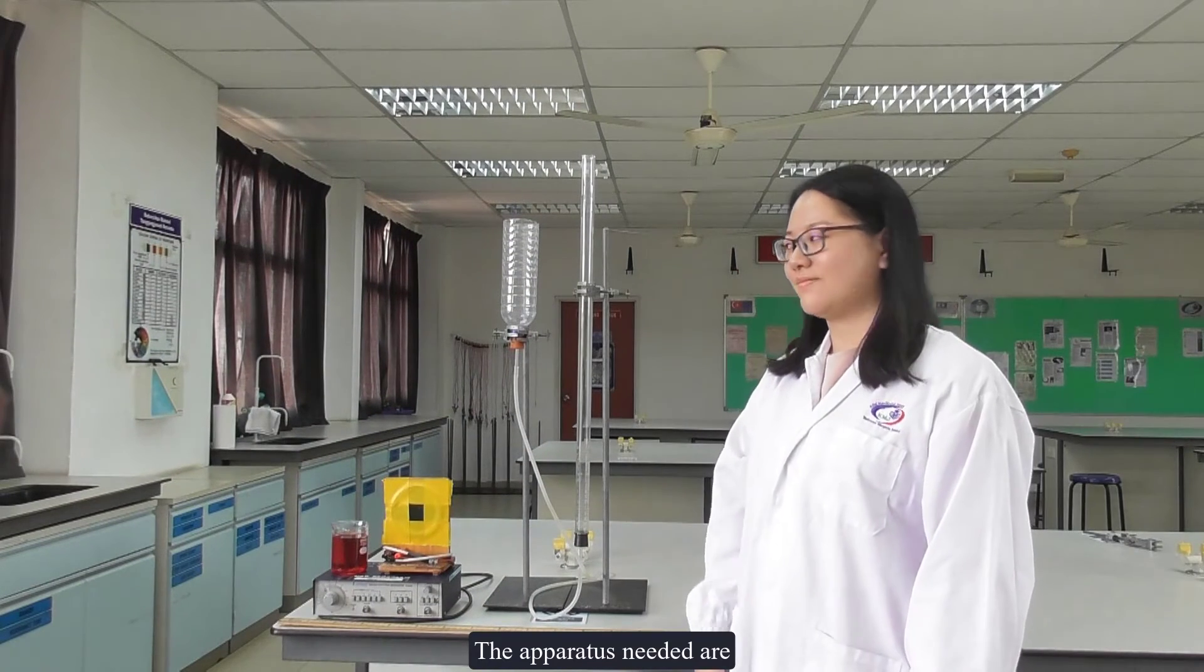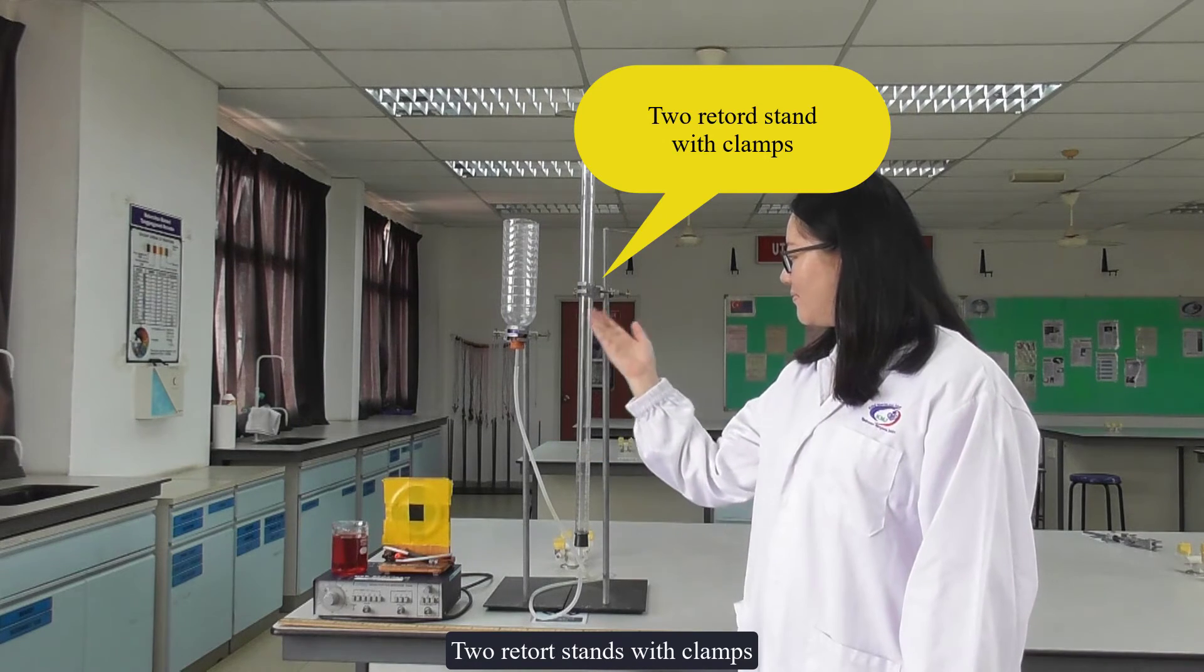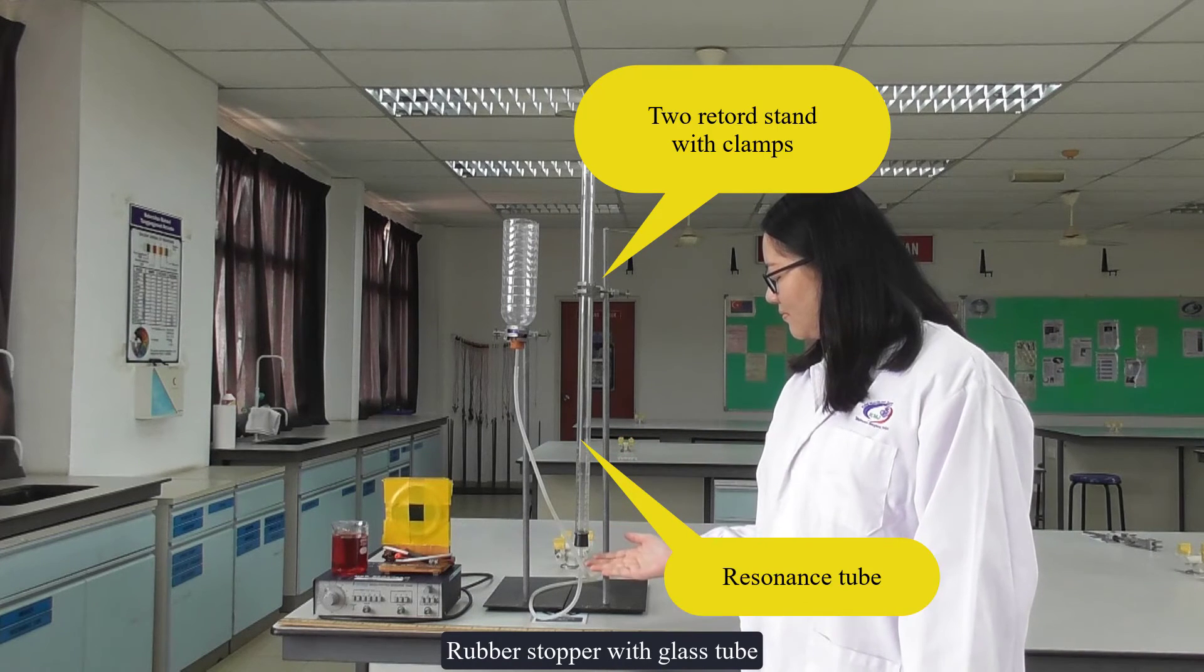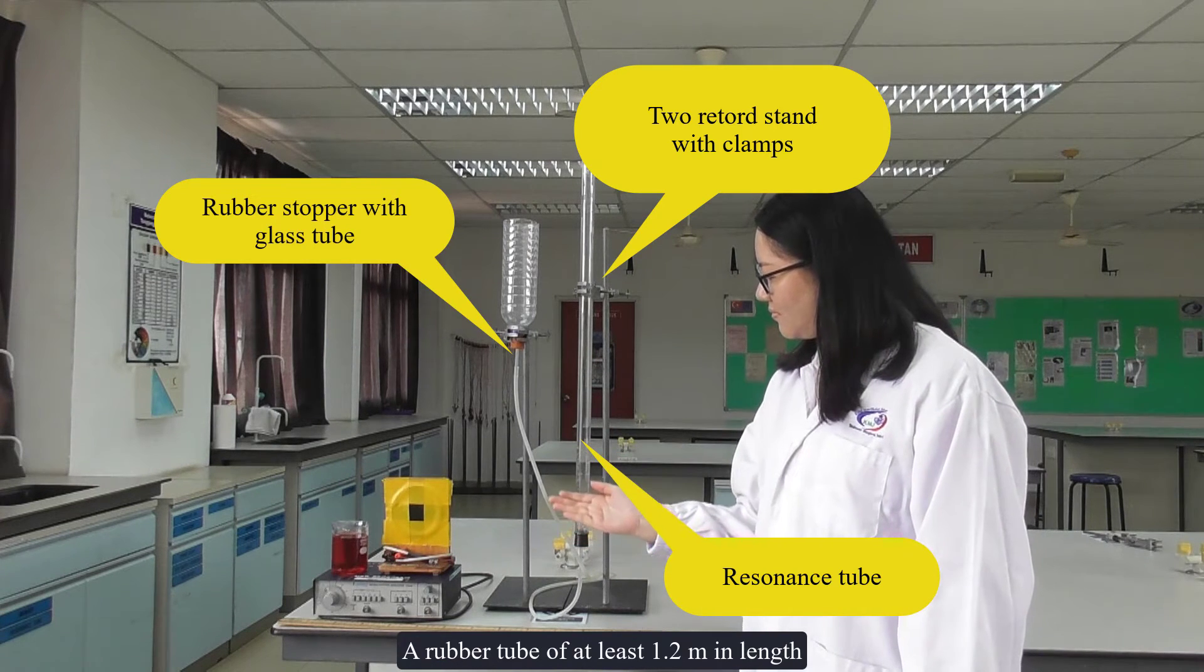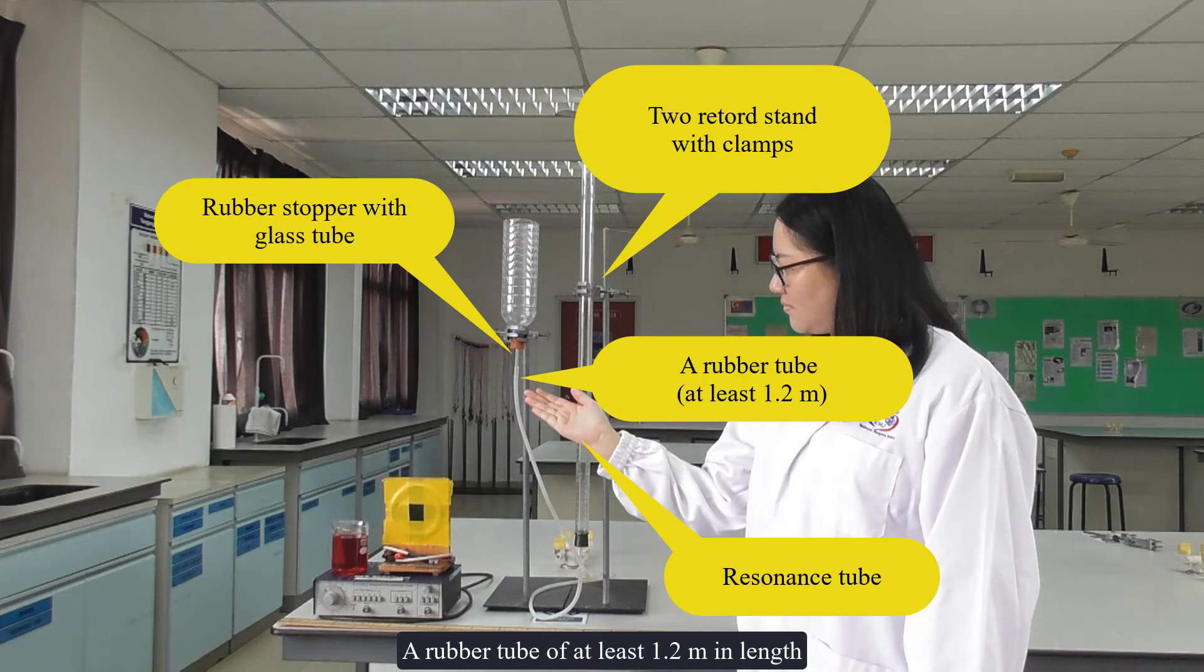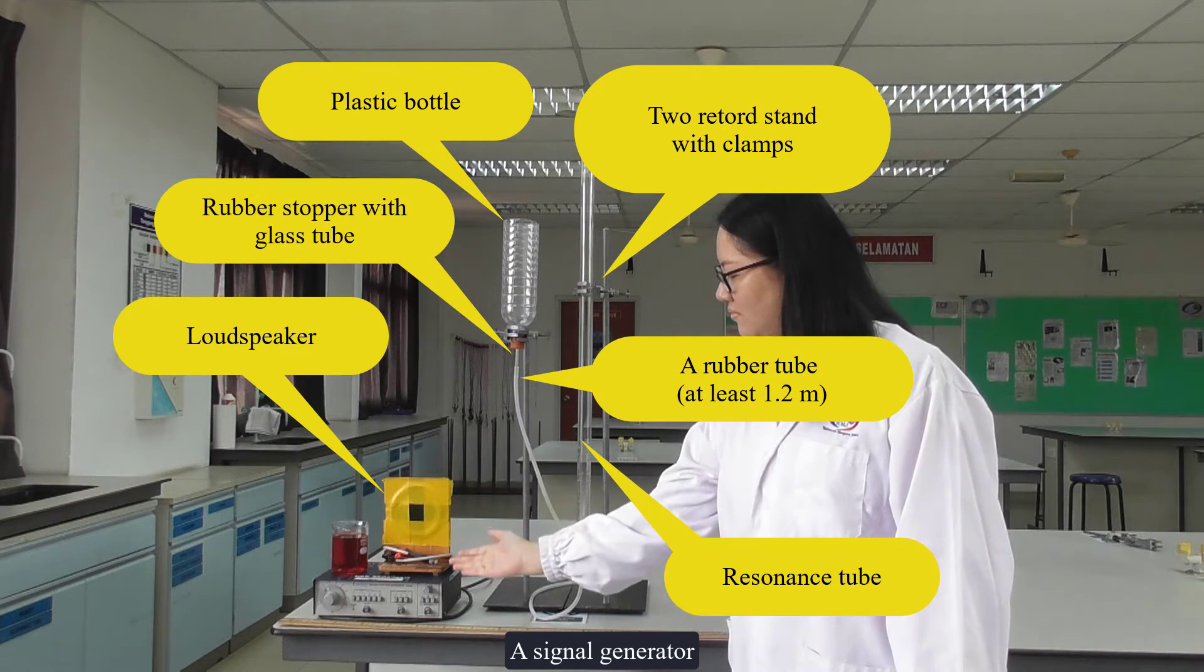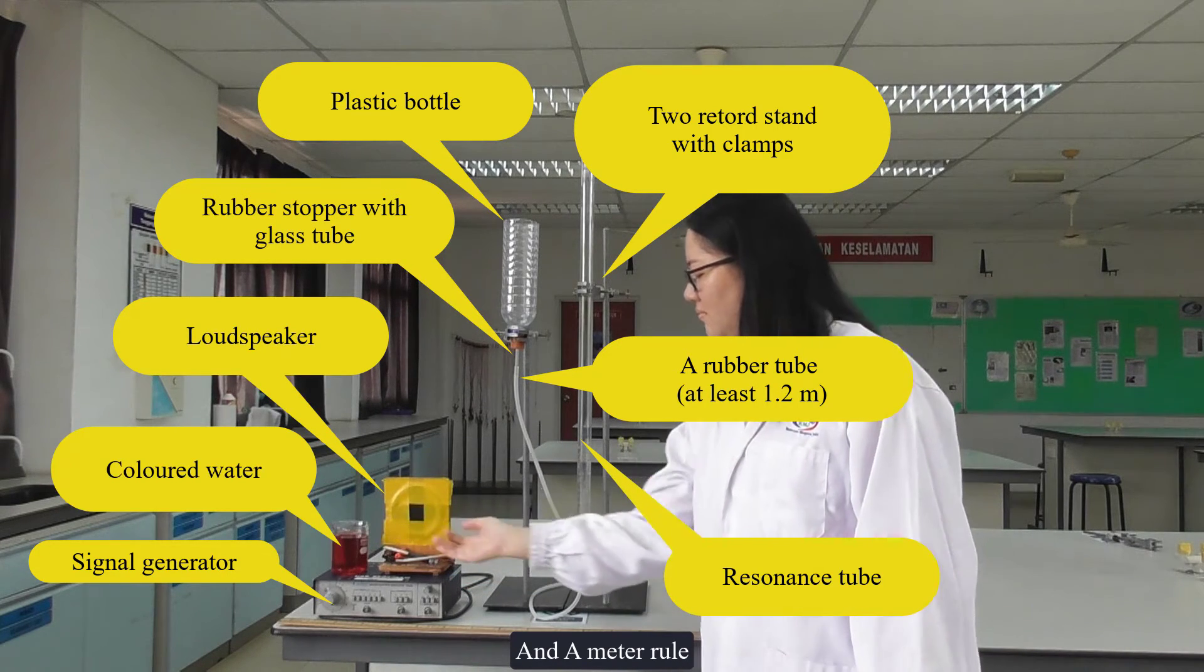The apparatus needed are two retort stands with clamps, a resonance tube, rubber stopper with glass tube, a rubber tube of at least 1.2 meters in length, a plastic bottle, a loudspeaker, a signal generator, colored water, and a meter rule.